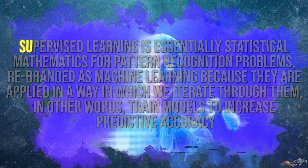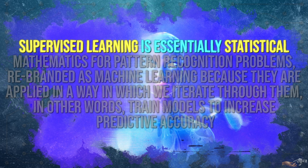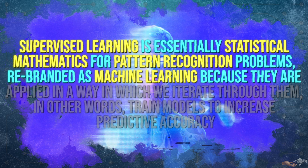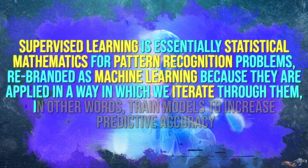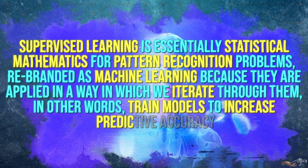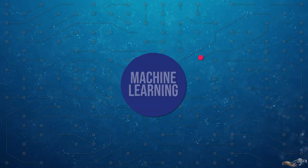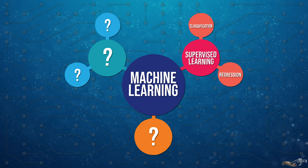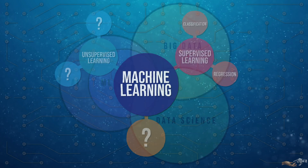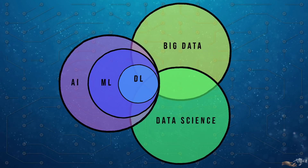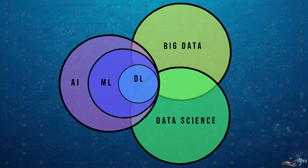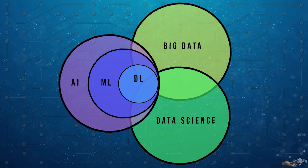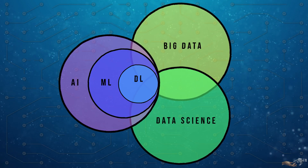So yes, supervised learning is essentially statistical mathematics for pattern recognition problems rebranded as machine learning, because they are applied in a way in which we iterate through them — in other words, train models to increase predictive accuracy. Supervised learning isn't the only subset of machine learning; in the next video in this AI series we will cover unsupervised learning, and progressing forward, how deep learning ties into all of this — all in a quest to clear up the misconceptions between AI, machine learning, and deep learning, and coming closer to answering the question posed at the start of this video.